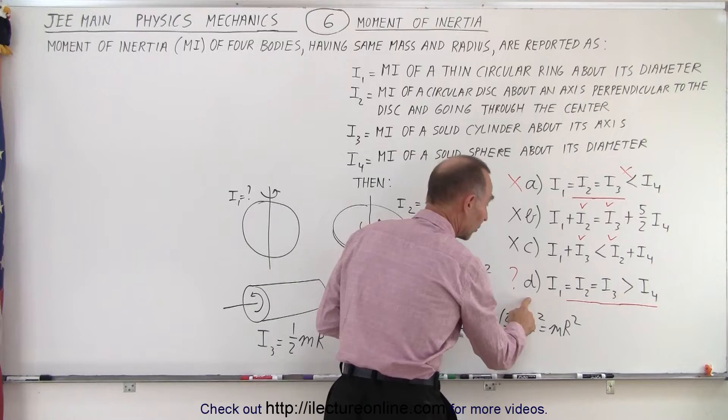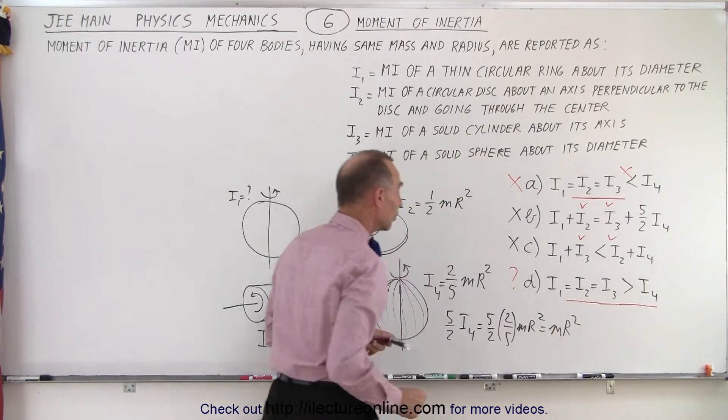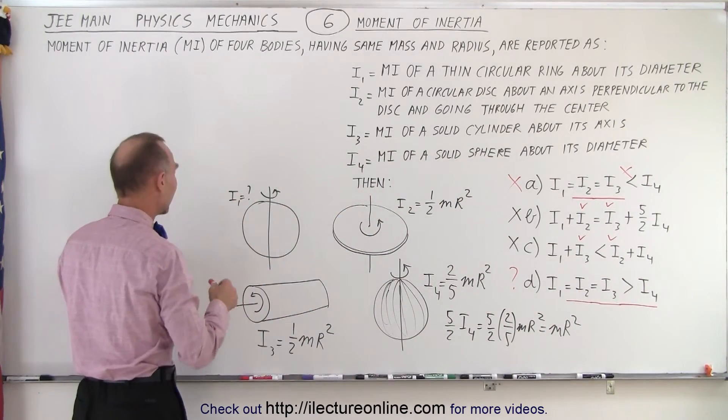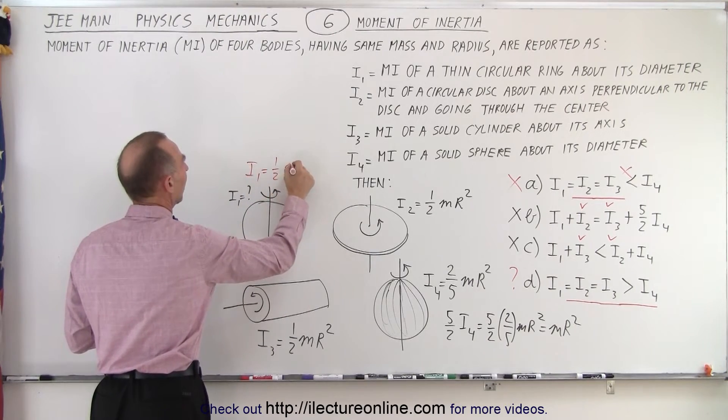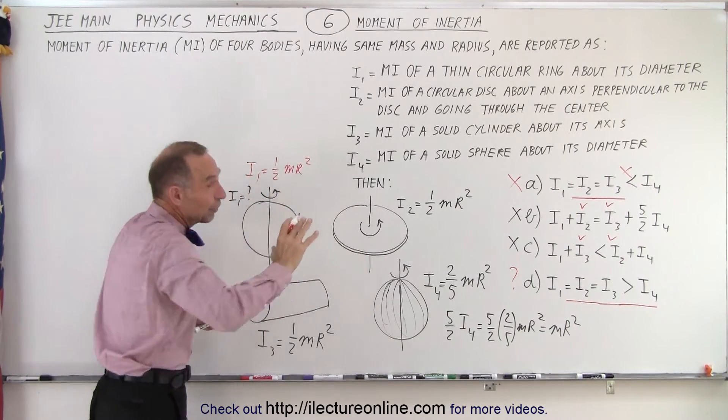Which means D by default would have to be correct. And then if that's true, if D is correct, then I1 equals I2. In other words, I1 for that would have to be one-half MR squared.